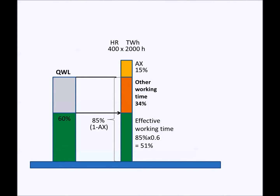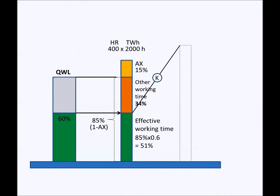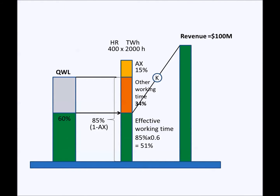With effective working time, the company makes the revenue. There is a firm-specific coefficient which determines how much revenue the company can make with one effective working hour. This company makes 100 million dollars in revenue.